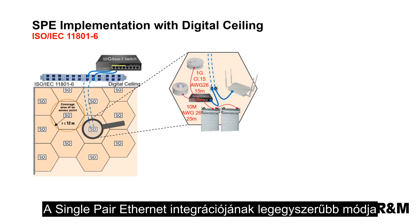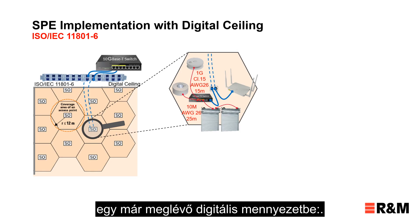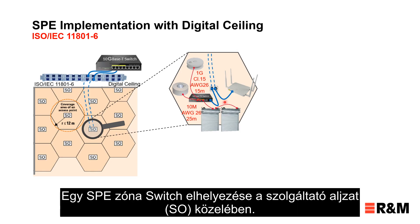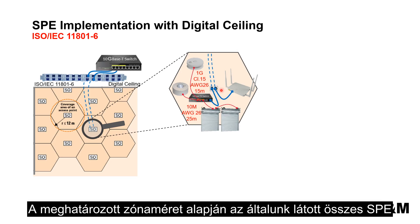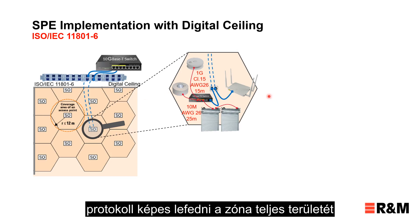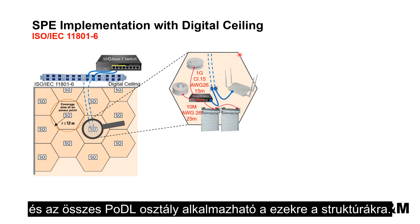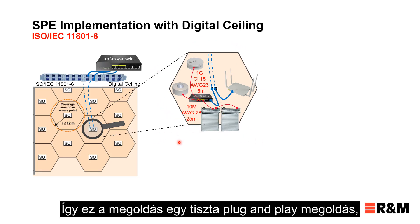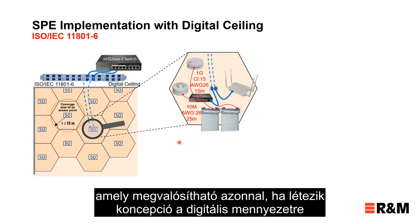The easiest way to integrate single-pair Ethernet into an existing digital ceiling is to place a single-pair Ethernet zone switch near the service outlet. Based on the defined zone size, every single-pair Ethernet protocol we have seen would be able to support the complete range of the zone, and all PoDL classes could be applied in these structures. This solution is a pure plug-and-play solution that could be realized immediately if you have a digital ceiling concept.